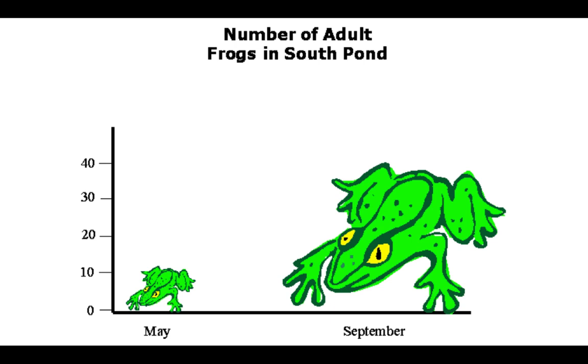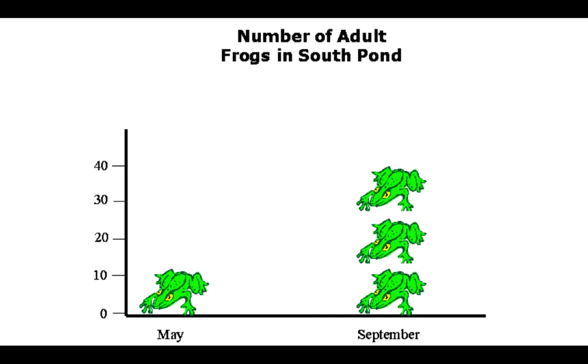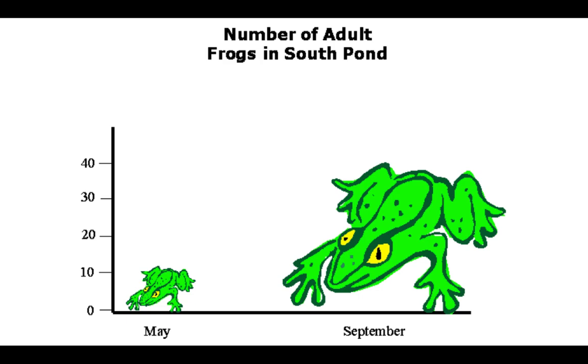Here's another example. We see here that in May there were about 13 adult frogs in the South Pond. And by September there was about 39. What's the effect in that data? 13 to 39, it's about a 200% change. But what about the difference in size? The problem here is that we're actually changing the size of the frog in two dimensions. And so we're squaring the change in the data rather than simply linearly representing it. By doing changes in two dimensions rather than one data dimension, we create lie factor.